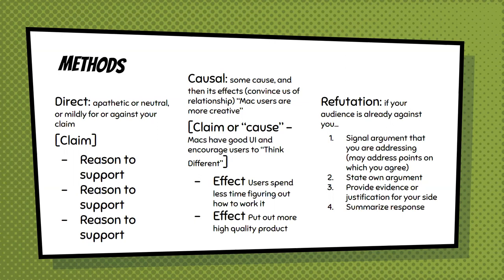Address points on which you agree, then state your own arguments and provide evidence and justification for your side. You shouldn't even use the word 'however' or 'but' in a persuasive argument — use 'and' instead. So: your side says this, okay, and what about this thing that my side says? Because then it seems like you're less attacky and less defensive. And then summarize the response.